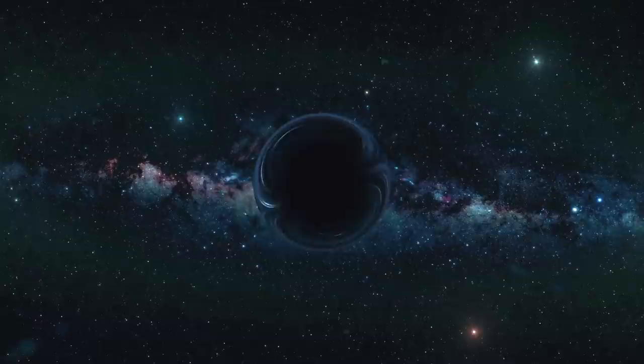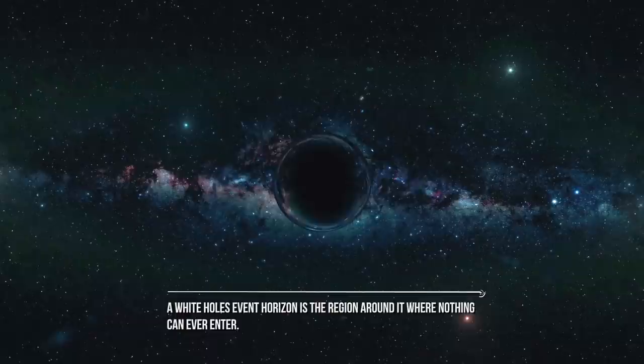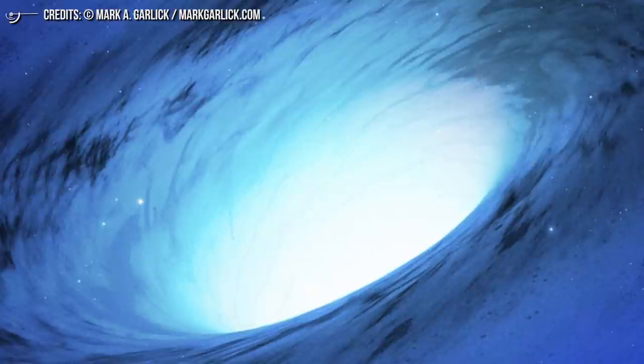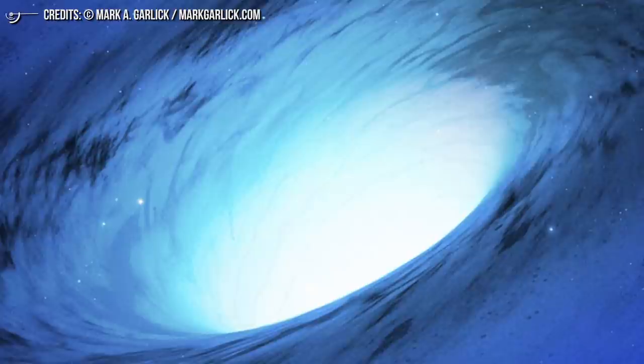So, if that's the case for black holes, how is it set up for white holes? Well, we established that they are counter-entities. So, in that case, a white hole's event horizon is the region around it where nothing can ever enter. Or let's state that better. Since nothing can actually enter a white hole, it's more honest to say that once an object exits a white hole, it can no longer go back to it.